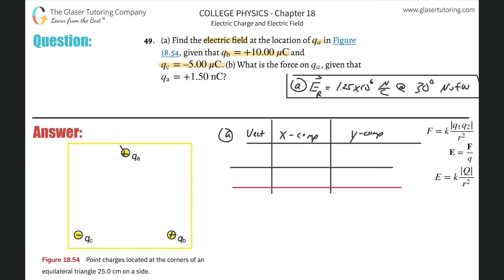Since q_a and q_b are both positive, they repel, so force F_b on q_a points away from q_b. Since q_c is negative and q_a is positive, they attract, so F_c on q_a points toward q_c. The geometry of these force vectors is exactly the same as in part A. We know all the angles — 30° from the y-axis — so let's calculate each force independently.